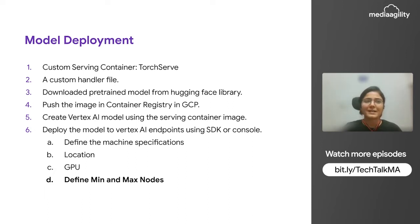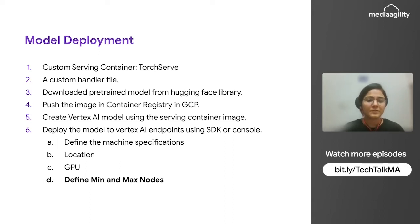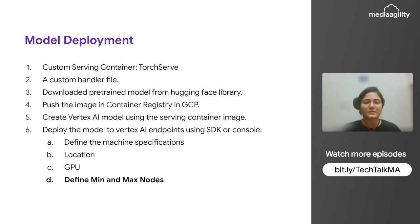Vertex AI supports auto-scaling and accelerators, and it allows you to define parameters for which machine you want to give to your model deployment endpoint. We can define machines like N1 Standard 4 or N1 Standard 8, or we can also define a custom machine. We need to give the location as it will help us get the lowest latency based on where we need to serve our users. If our model is very large and we need a GPU to load the model, we can specify that, along with minimum and maximum nodes.